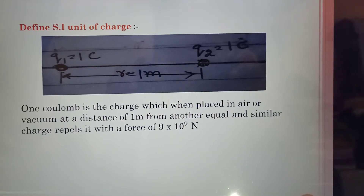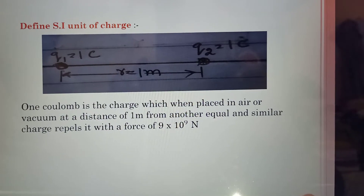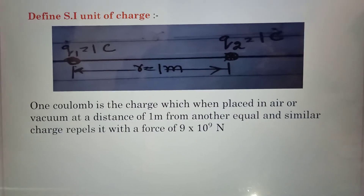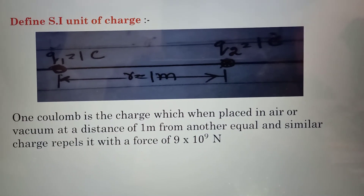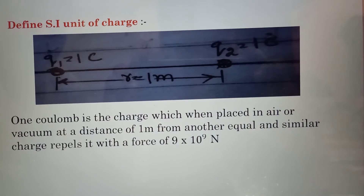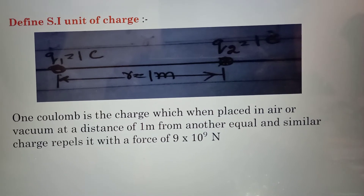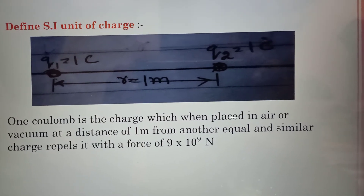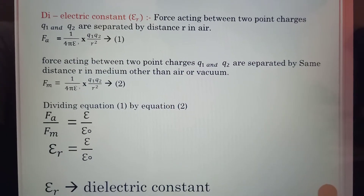Define the unit assignment of charge. If Q1 = 1 coulomb and Q2 = 1 coulomb at distance R = 1 meter, 1 coulomb is the charge which, when placed in air or vacuum at a distance of 1 meter from another equal and similar charge, repels it with a force of 9 × 10⁹ N.